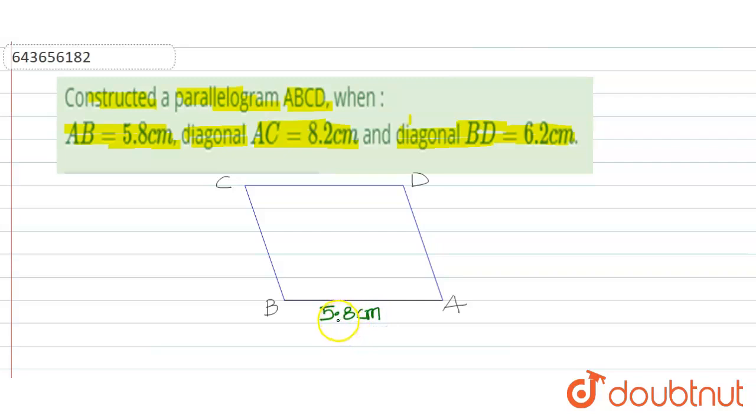And in the next step I will draw any diagonal AC or BD, so suppose I am drawing a line BD. And in the next step we will find the midpoint of BD, and we will draw the diagonal AC through this point.